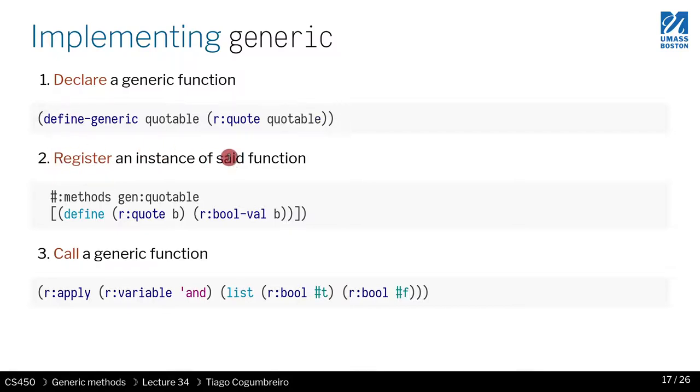Secondly, we learned that there is a way to register instances of that function. What that means is for each structure, we had a way to explain how that structure was implementing that particular case of the generic method.